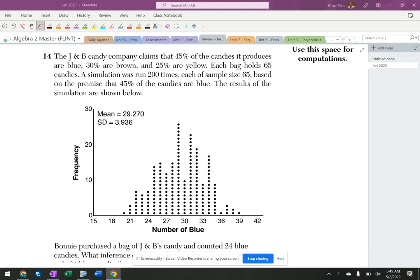So we got a ton of words and a dot plot. Let's see what's going on here. We had a candy company that claims 45% are blue, 30% are brown, 25% are yellow. Each bag holds 65 candies. The simulation was run 200 times, each sample size 65, based on the premise that 45% of the candies are blue. The results of the simulation are shown below.